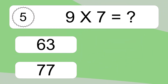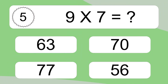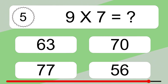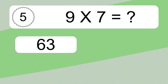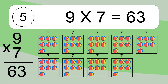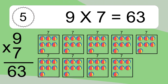Nine times seven equals what? Nine times seven equals 63. We have nine boxes, and each box has seven colorful balls inside. If you count all the balls in all the boxes together, you will have nine times seven balls. This equals 63 balls.